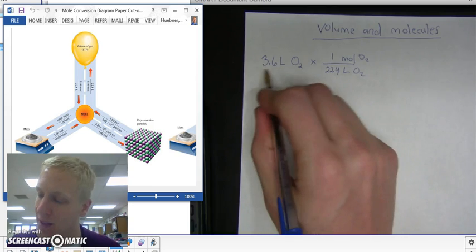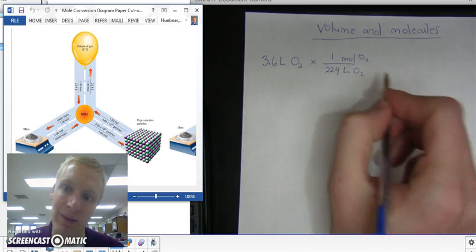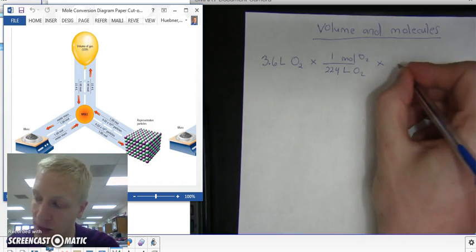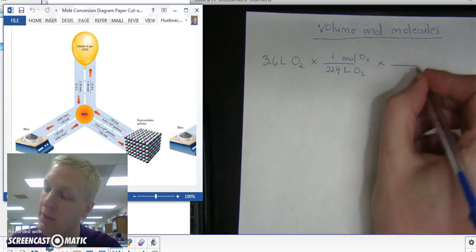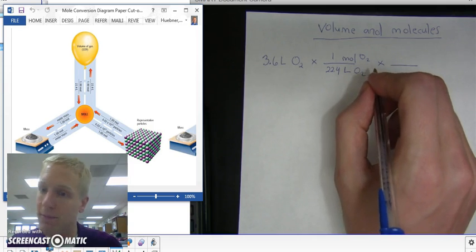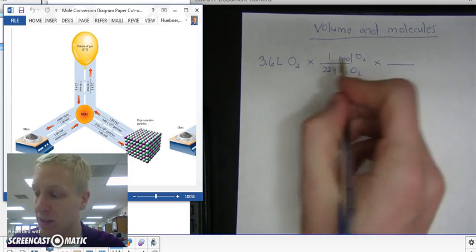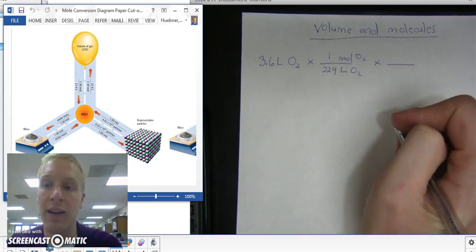Instead of just calculating this out, pressing equal, and then doing another conversion factor, it's going to be much easier in the end, especially if you take AP chemistry or IB chemistry, where you have five, possibly six, conversion factors in a row. It's easier just to do conversion factor after conversion factor.